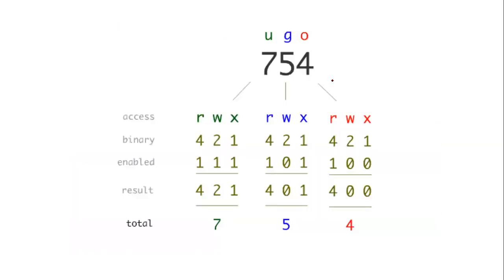This is another example depicting permissions. The user is the file owner — you have 7. Then group owner, then others. So 7 is all permissions, 5 is read and execute, 4 is read only. Each permission bit: enabled is 1 and disabled is 0. Read, write, and execute are represented as bits.